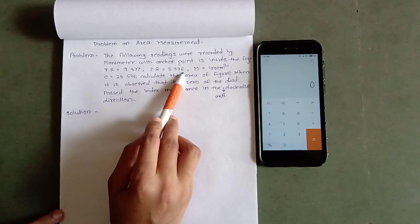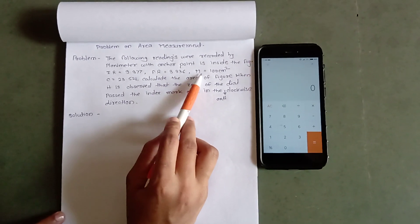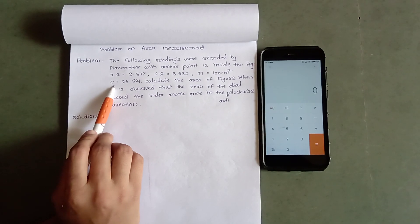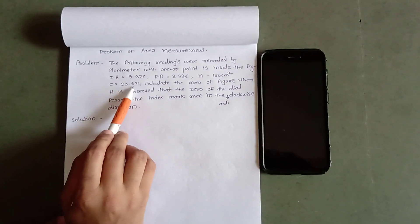Final reading 3.336 and the value of M equals 100 cm square. The value of C is also given 23.521.